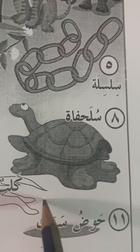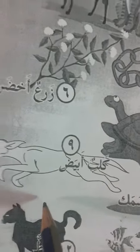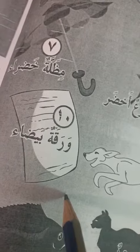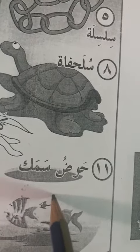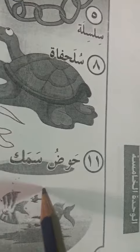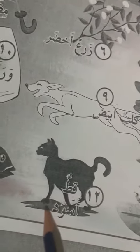سلحفاء — turtle. كلب أبيض — white dog. ورقة بيضاء — white paper. حوض سمك — fishbowl, or aquarium, or fish tank. قط — cat.